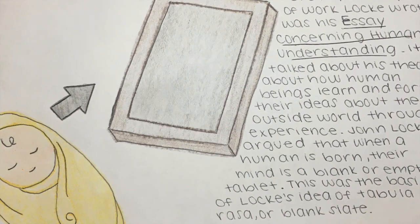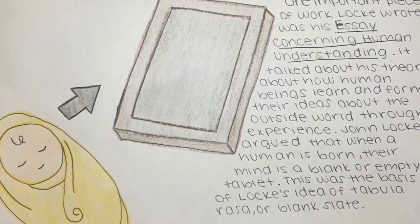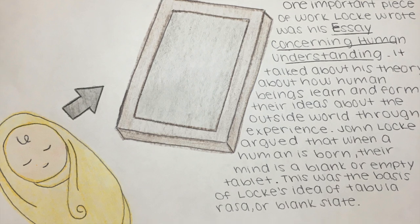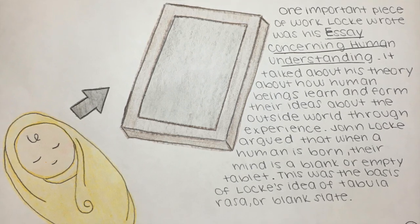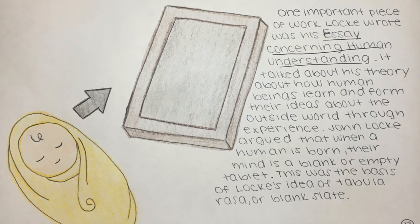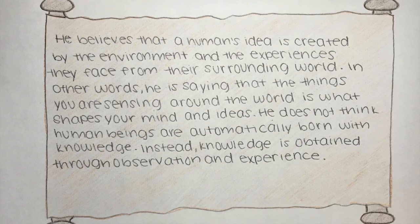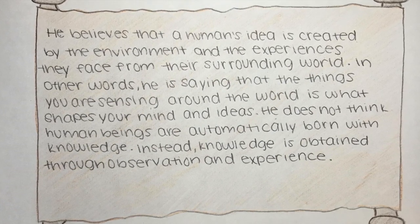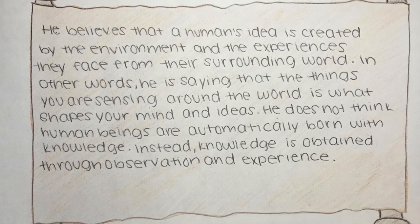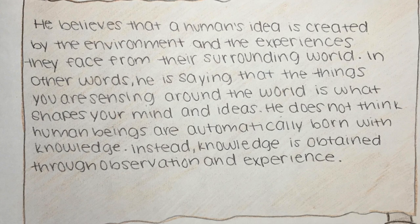One important piece of work Locke wrote was his Essay Concerning Human Understanding. It talked about his theory about how human beings learn and form their ideas about the outside world through experience. John Locke argued that when a human is born, their mind is a blank or empty tablet. This was the basis of Locke's idea of tabula rasa, or blank slate. He believes that a human's ideas are created by the environment and the experiences they face from their surrounding world. Knowledge is obtained through observation and experience rather than being innate.